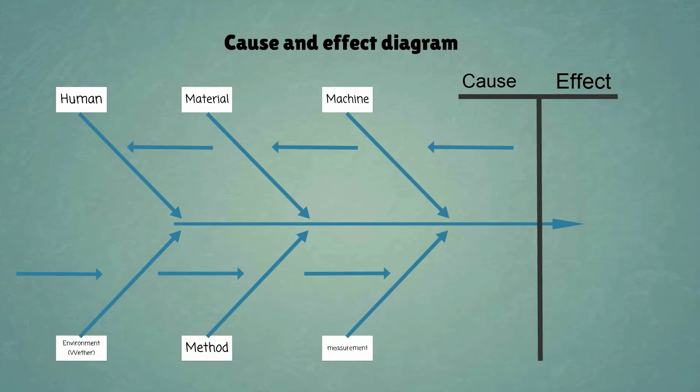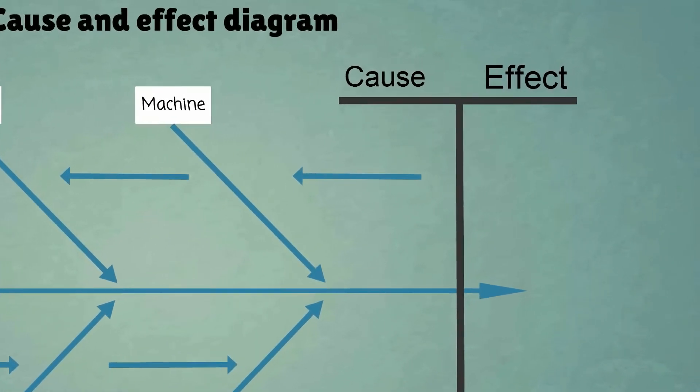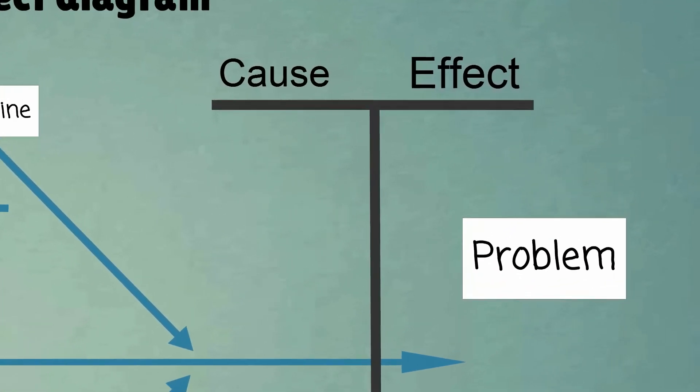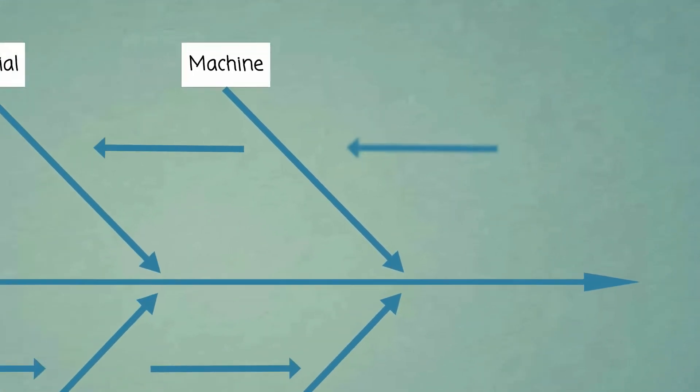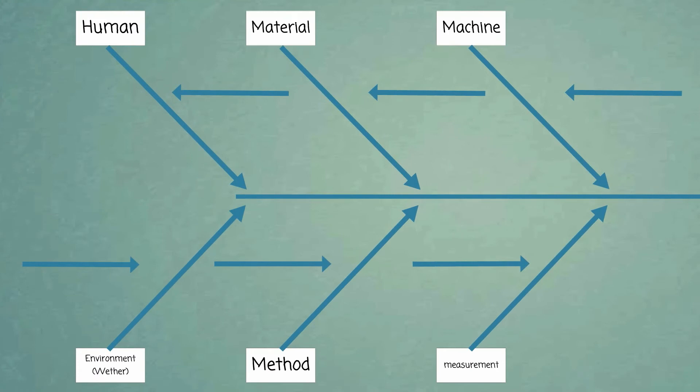The diagram makes a subdivision between causes and effects. At the right side of the diagram, the effect is being described. On the left side, the causes are being mapped. These causes can be grouped into six categories, which in their own respect have ramifications to subcauses.